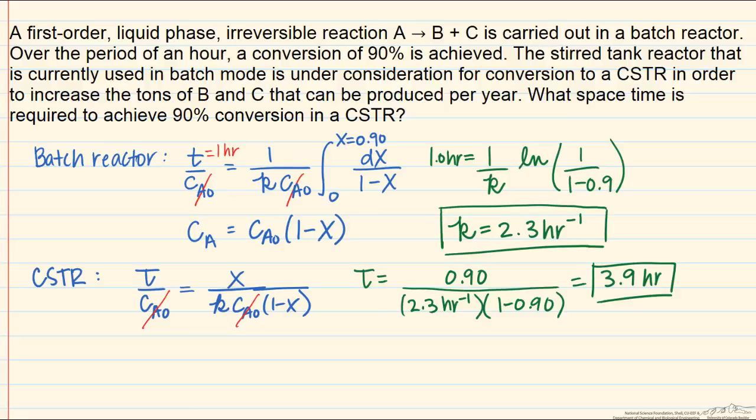So in other words, we need in a stirred tank to achieve this conversion of 90%, we need 3.9 times as long when we're running this process continuously as we did in the batch reaction system. This is because batch type reactor systems inherently for positive order reactions are more efficient.